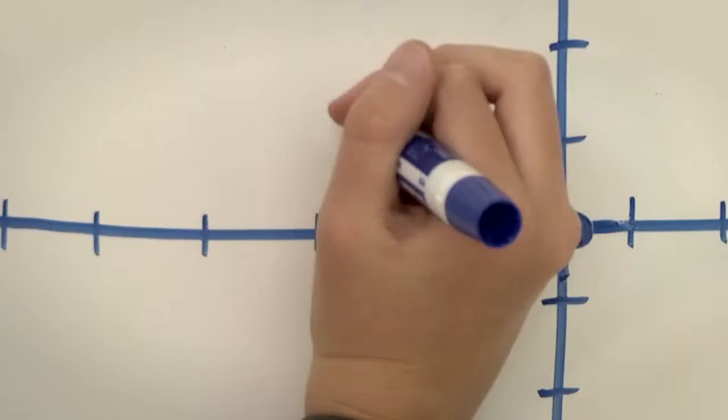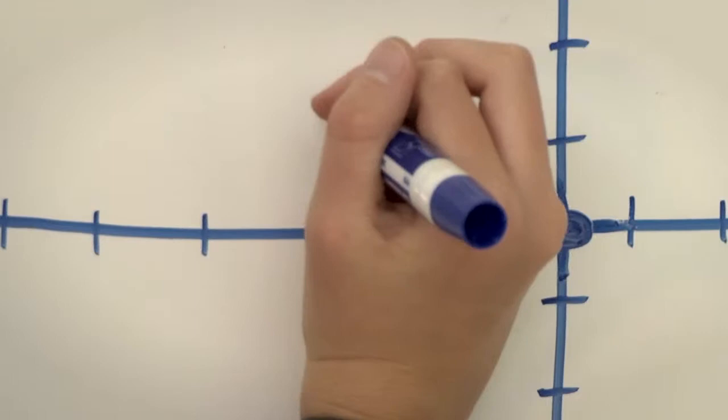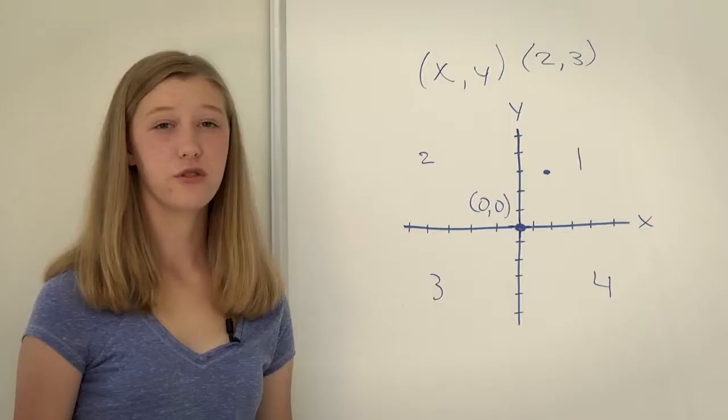The center of the graph is called the origin. It is located at the center and is denoted as (0,0).